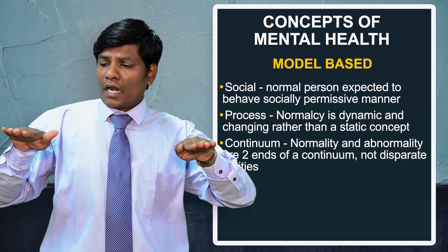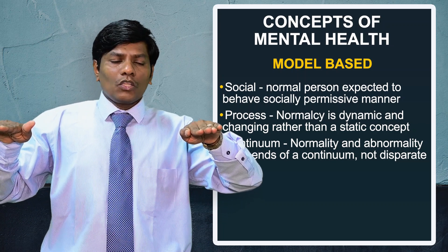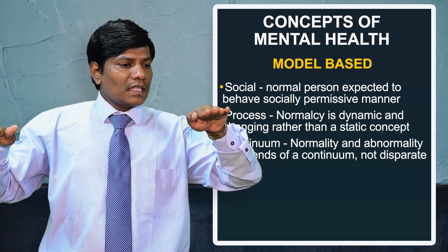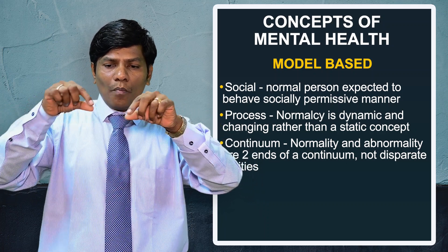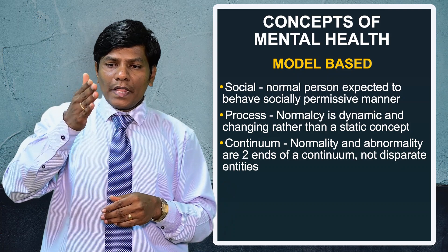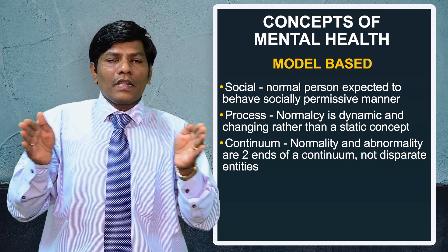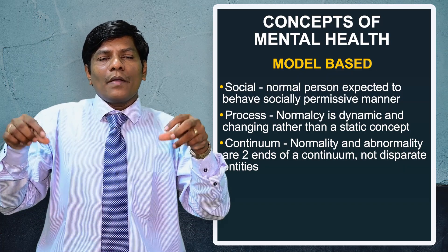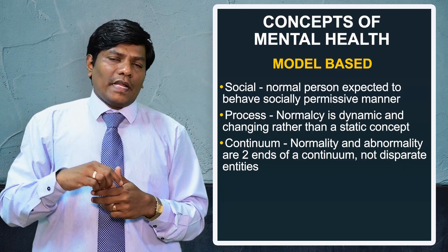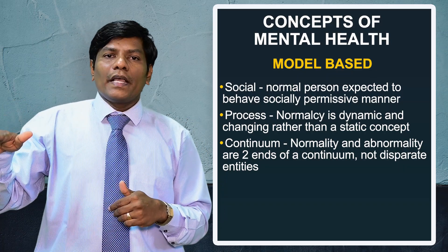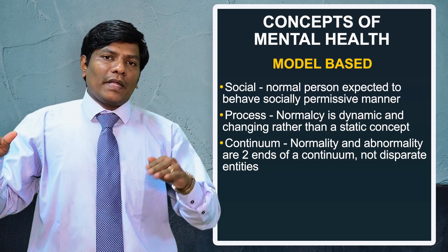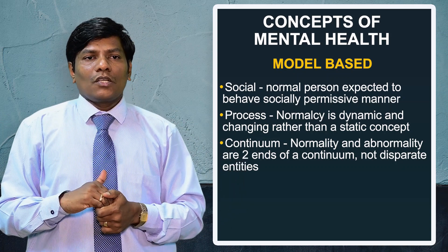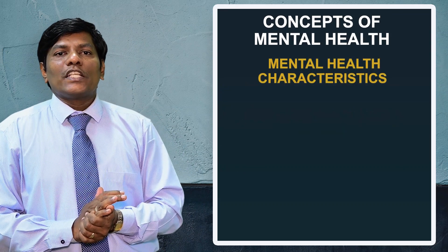The continuum model has two polar ends — one end is normalcy (mental health) and the other end is abnormalcy (mental illness). Everyone stands somewhere along the line between these two poles. A mentally healthy person should be close to the normalcy pole, while a mentally ill person is at the abnormalcy pole.